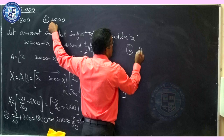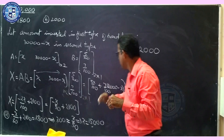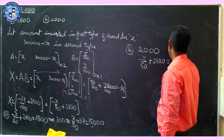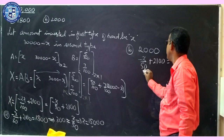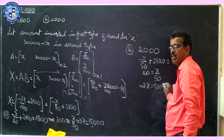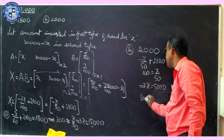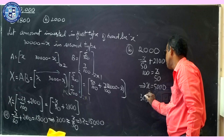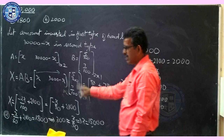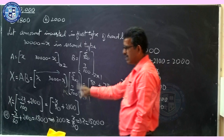For part (b), total interest = 2,000: −X/50 + 2,100 = 2,000, so X/50 = 100, giving X = 5,000. The investment in the first bond is Rs. 5,000 and in the second bond is Rs. 30,000 − 5,000 = Rs. 25,000.